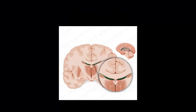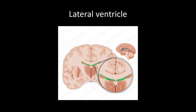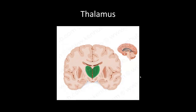Next we go on to coronal sections. First, we have the lateral ventricles highlighted in green — the big C-shaped structure with horns or points sticking out on the posterior aspect. Next, we have the thalamus, part of the diencephalon, highlighted in green.